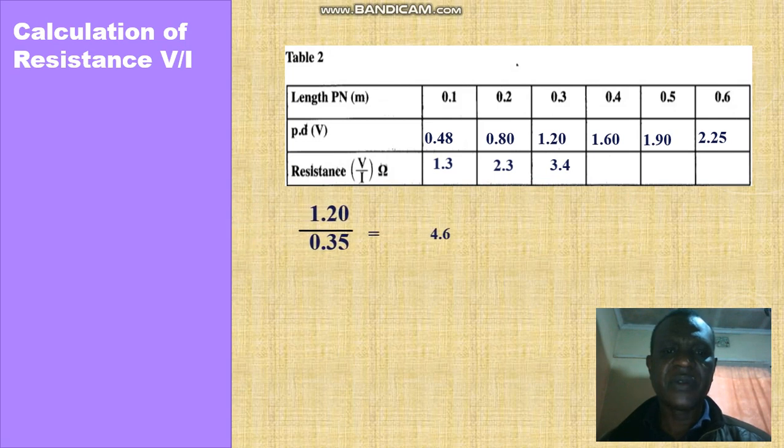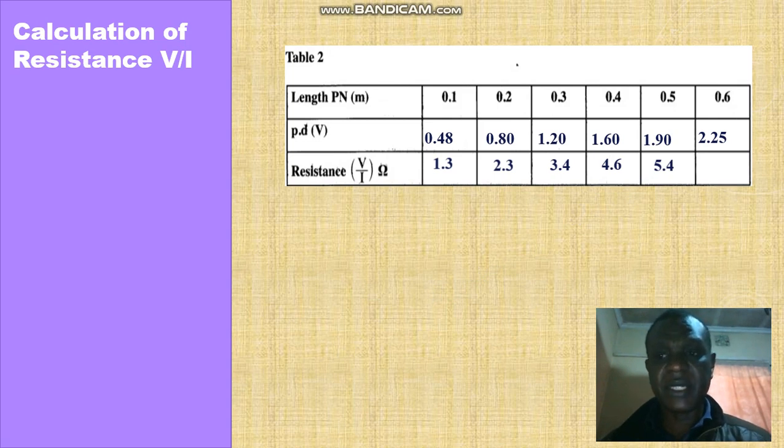1.6 over 0.35, we get 4.6. 1.90 over 0.35, we get 5.4. Then lastly, 2.25 divided by 0.35, we get 6.4.